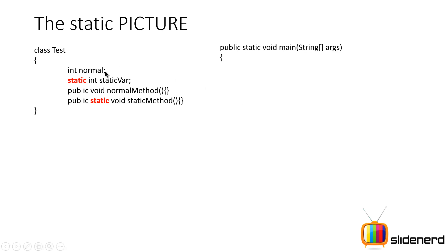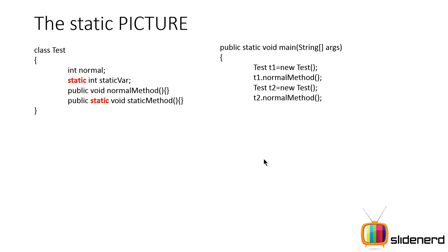So if you go to the main method, to use the normal variable or normal method, you have to first create the object of class test — you say test t1 is new test, then you can say t1.normalMethod. Again if you create t2, another object of class test, simply say t2.normalMethod. In this case, normal method is going to perform some operation related to the data of t1, meaning the normal variable. Now if you take a look at the static method, it is simply class name dot method name. In other words, this method does something which does not depend on the data for class test — it does not depend on IntNormal or normal method. That's what the static method is all about.